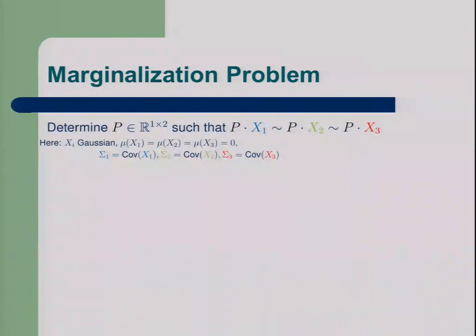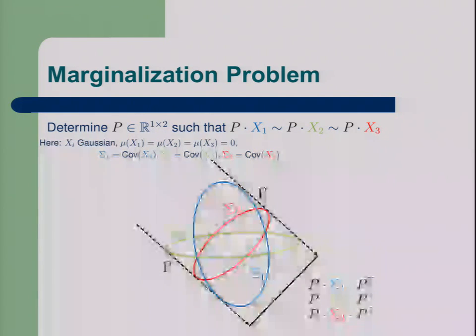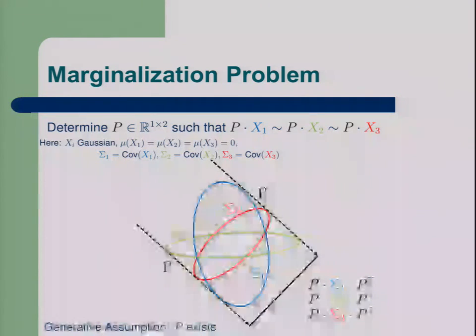But first things first. Let us look at the simplest instance of the marginalization problem as something interesting happens. Let's assume that they are Gaussian and centered, the means are zero. We can think of those distributions in terms of their covariances, which I have depicted here. The projection we are looking for is P, and the projected covariances are this black line. So covariances just transform linearly. And of course, in order to do something which makes sense, we will make the generative assumption that P exists.